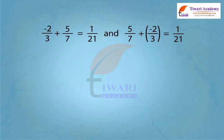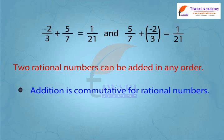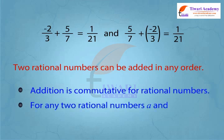We know how to add two rational numbers. Two rational numbers can be added in any order. Therefore, addition is commutative for rational numbers. That is, for any two rational numbers a and b, a plus b is equal to b plus a.